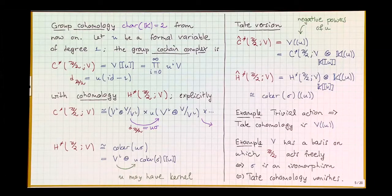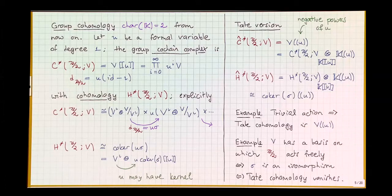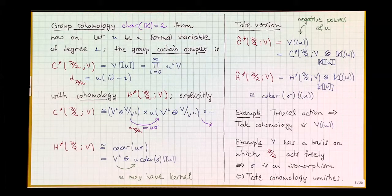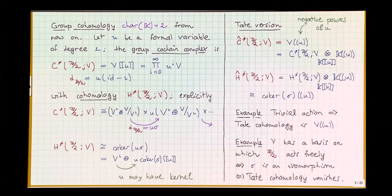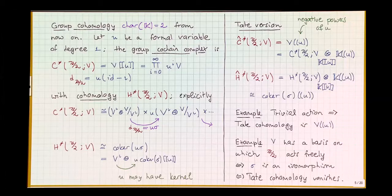From now on I focus on fields of characteristic two — F2 will do. You take V with its involution, take infinitely many copies of V labeled by increasing powers of a formal variable u of degree one, and write a differential that increases degree by one: u times the identity minus the involution. This squares to zero, giving a chain complex — the group cochain complex — whose cohomology is called the group cohomology of V. Using the splitting from before, the differential is essentially the map σ = id − ι, and the cohomology has the invariant part in degree zero, then in each higher degree it reproduces V^ι modulo the image of σ.